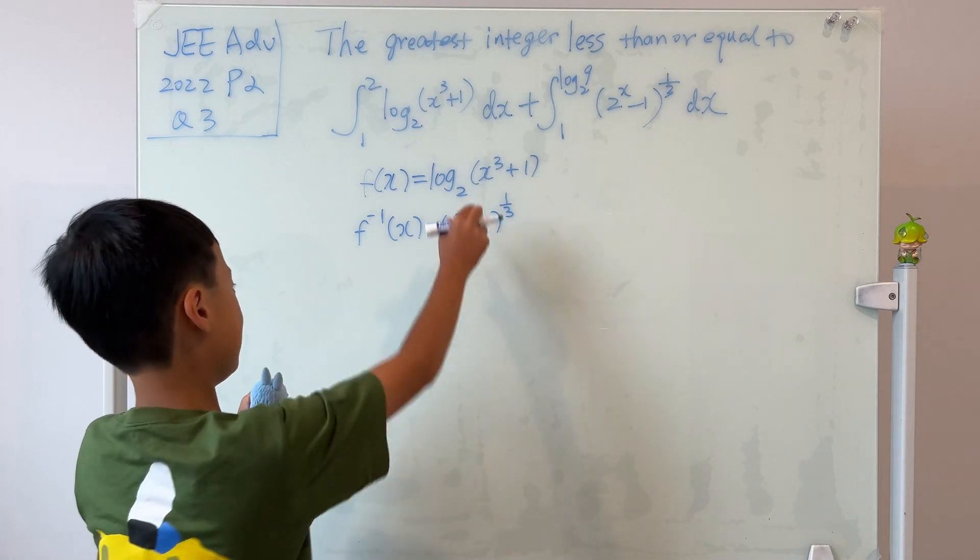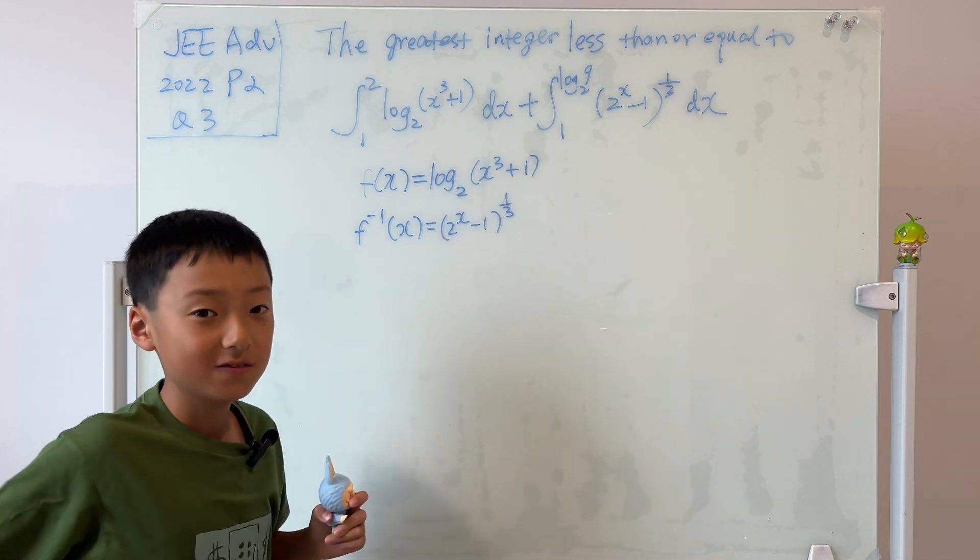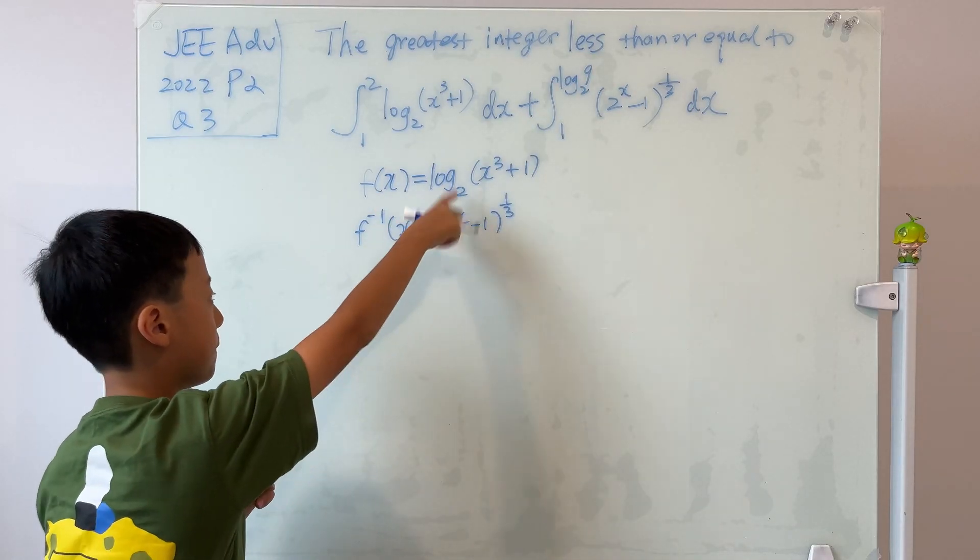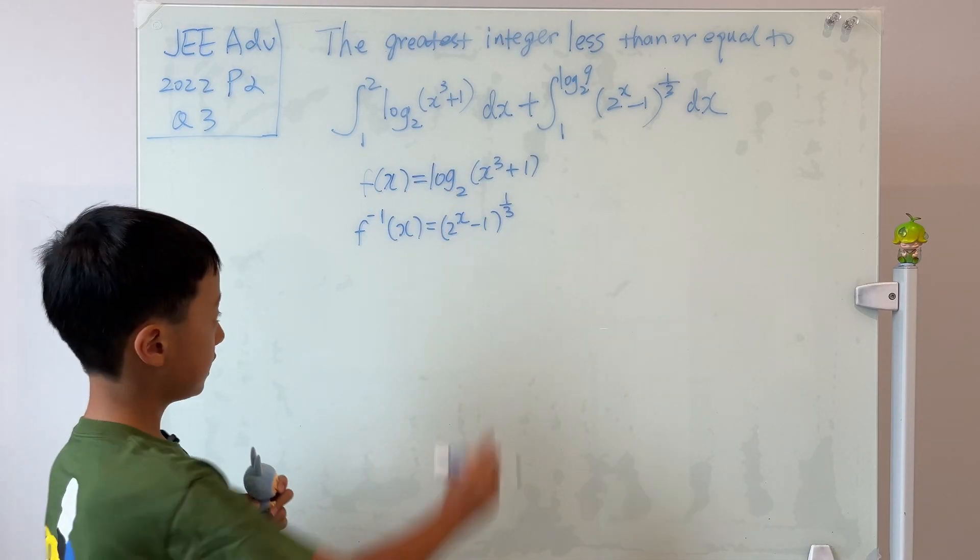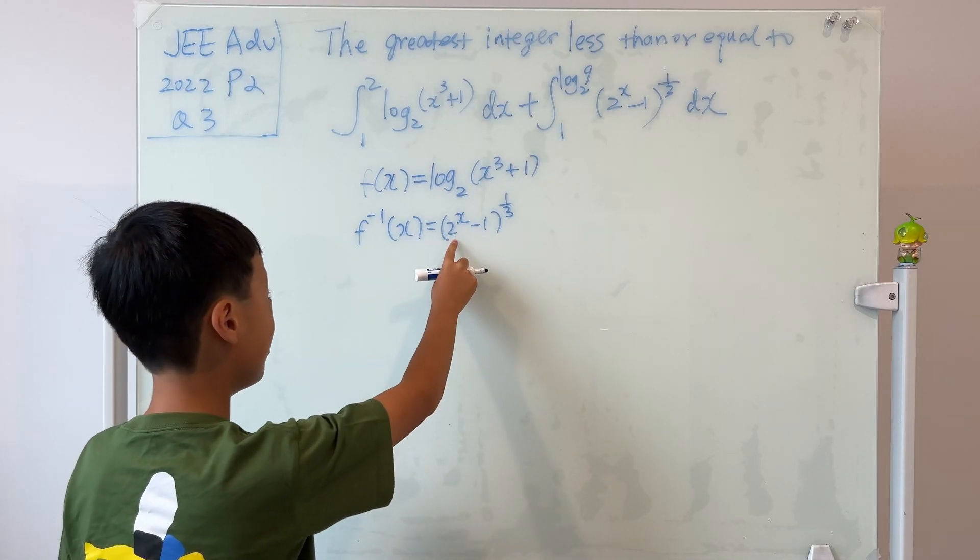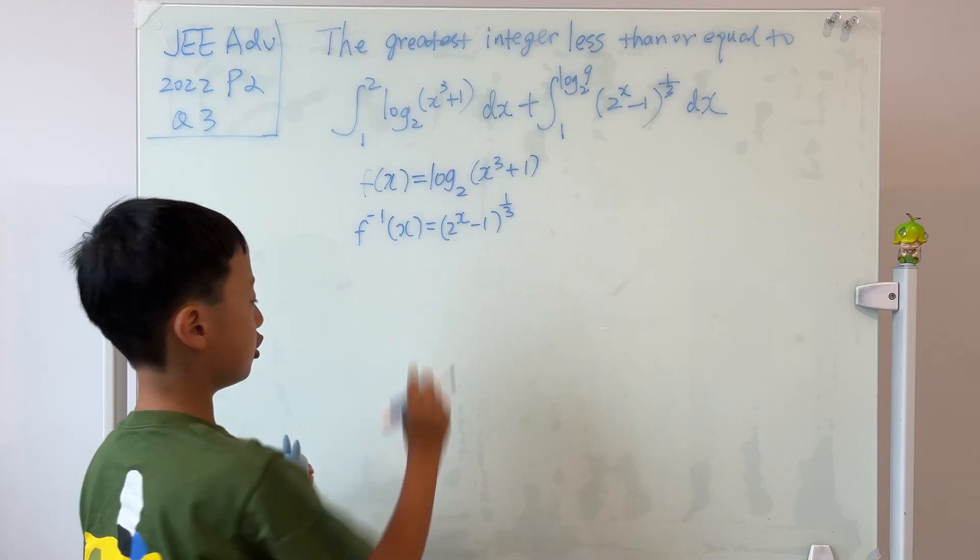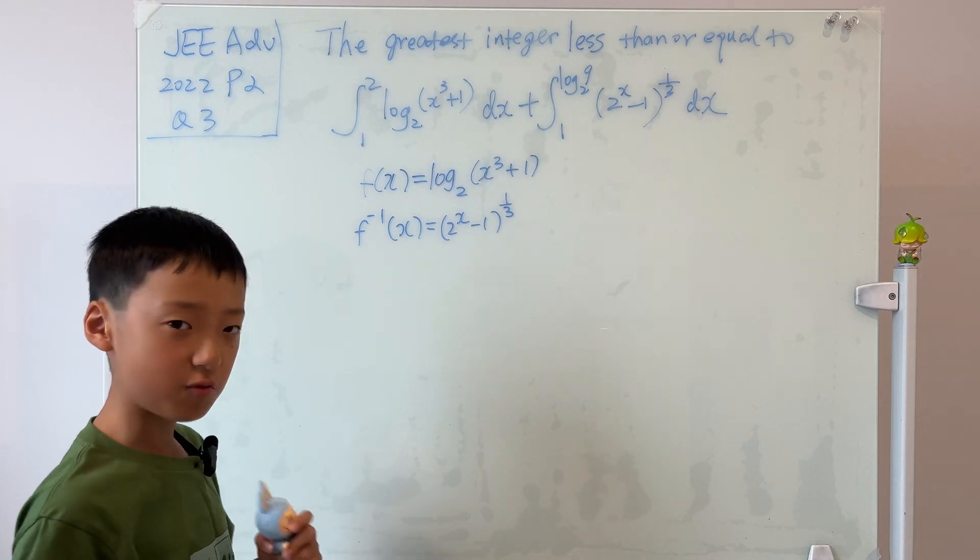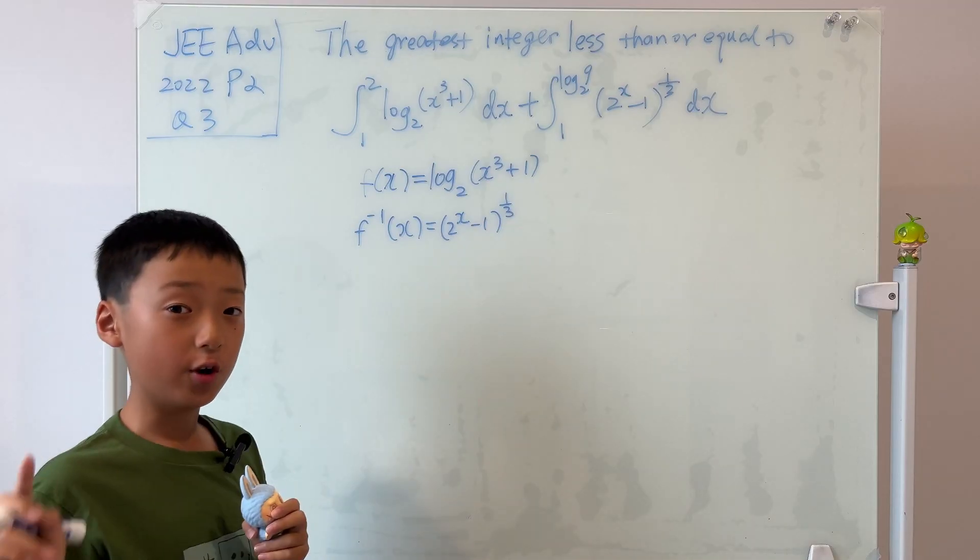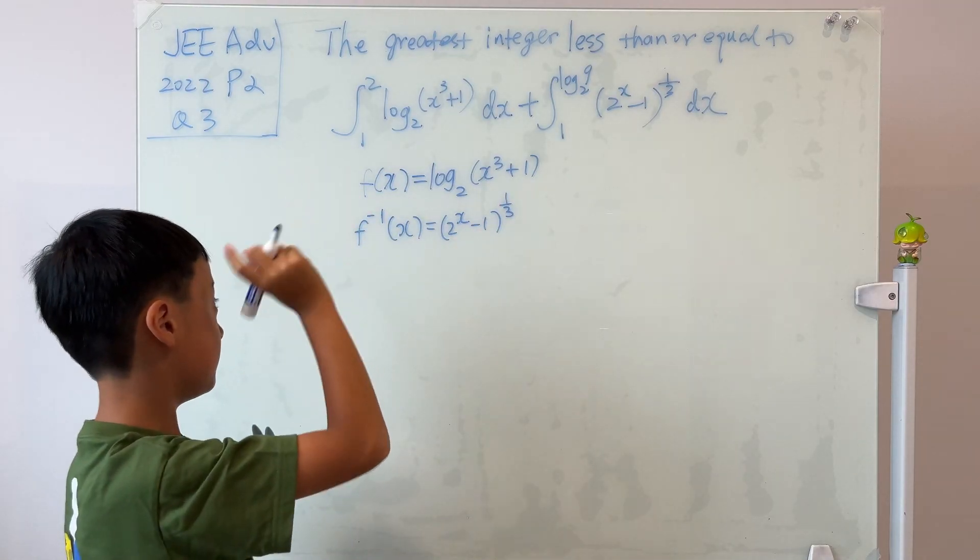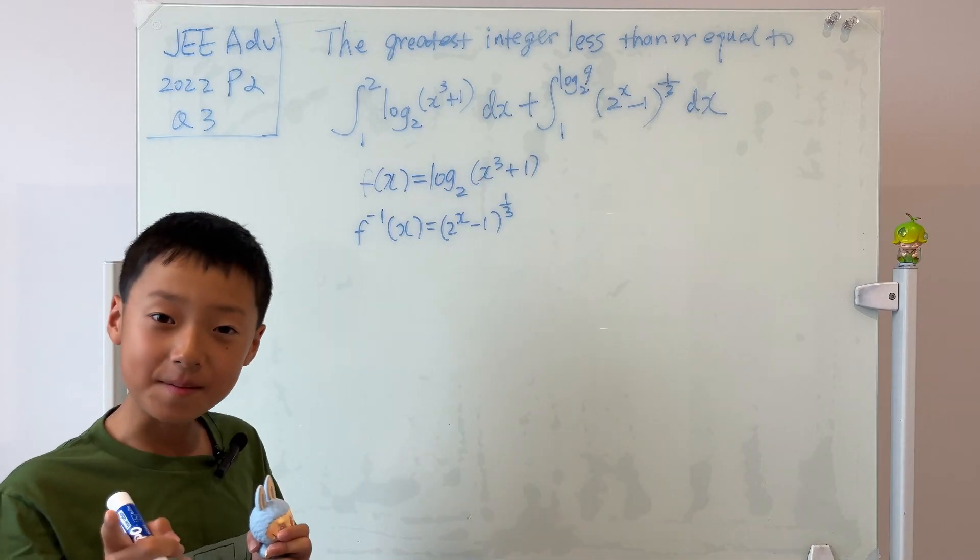The sequence of events of how we make this is we cube, we add, and we take log base 2. Now, let's look at the sequence of this. We exponentiate it with base 2, we subtract, and cube root. That sounds like an inverse, right? You guys can try this on your own, and I'll just tell you guys that these two are indeed inverse functions.